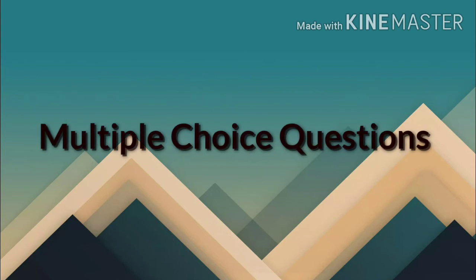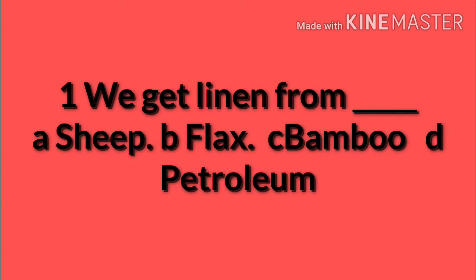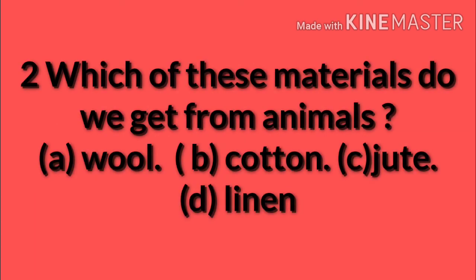Now let's do our multiple choice questions. First: We get linen from — sheep, flax, bamboo, or petroleum? The answer is flax. Second: Which of these materials do we get from animals? We get cotton from the cotton plant, jute from the jute plant, linen from the flax plant — but we get wool from animals, so wool is the correct answer.